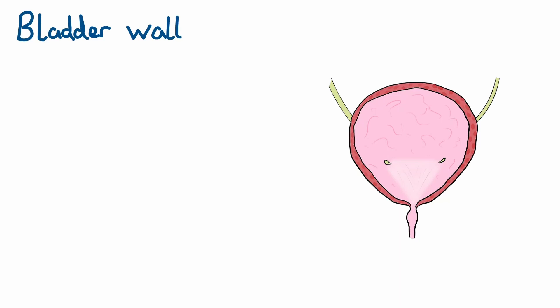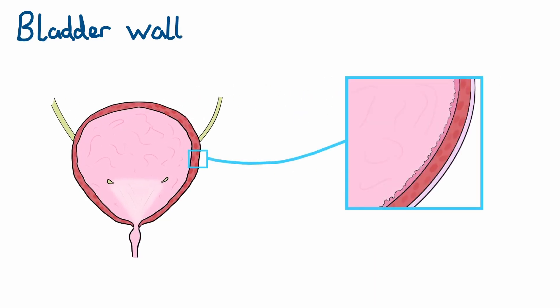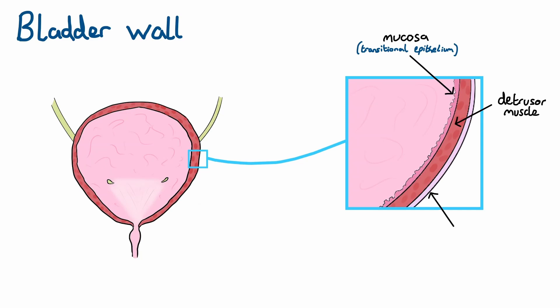The inner lining of the bladder is the mucosal layer, made up of transitional epithelium — a type of epithelium designed to change shape in response to stretching. External to this is the detrusor muscle, a smooth muscle with fibres orientated in multiple planes to maintain its structure whilst fully stretched. The function of the detrusor muscle is to contract and force urine out through the urethra during urination. The superior and posterior wall of the bladder are also covered with a layer of visceral peritoneum.